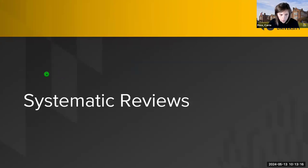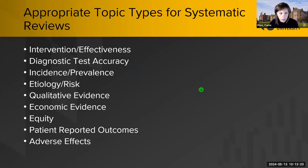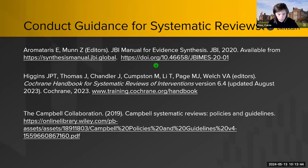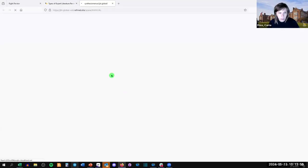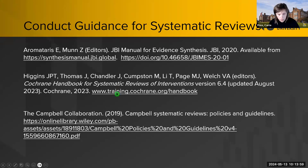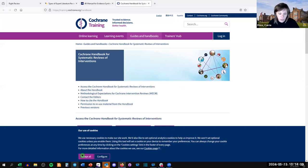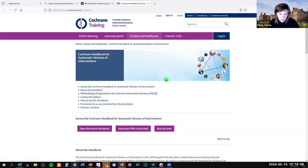Let's talk about systematic reviews. If you plan to do one, you probably have a question about interventions or effectiveness, diagnostic test accuracy, incidence or prevalence, etiology or risk, qualitative data, economic evidence, equity, patient-reported outcomes, or adverse effects. There's lots of guidance so you don't have to go just off of this information alone. There's the JBI Evidence Synthesis Manual and the Cochrane Handbook. These handbooks exist to guide you whether or not you're doing a Cochrane or JBI review.